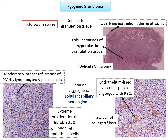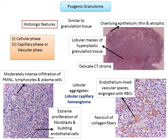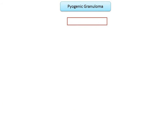The development of pyogenic granuloma can be classified into three phases: first, the cellular phase, with an increase in inflammatory cells; second, the capillary or vascular phase, characterized by overzealous budding of endothelial cells; and third, the involutionary phase, wherein the lesion begins to regress and resembles a fibroma.